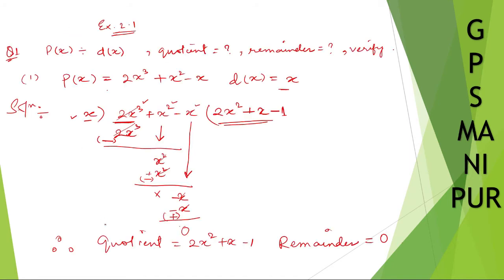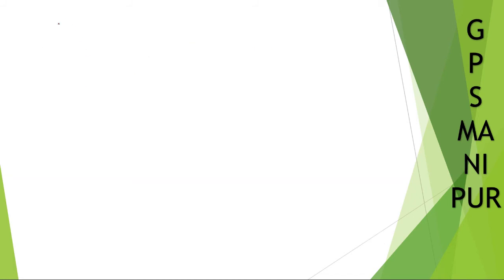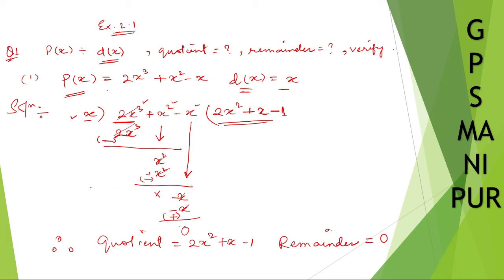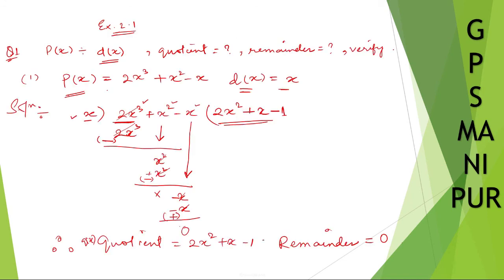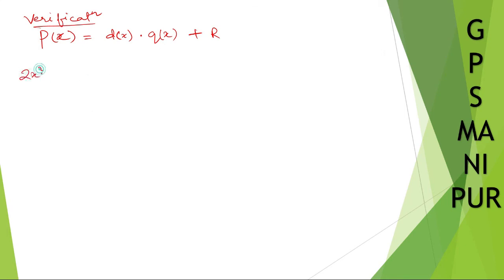Now we need to verify. For verification, we use the division algorithm: p(x) = d(x) · q(x) + r. So p(x) is 2x³ + x² − x, d(x) is x, and q(x) is 2x² + x − 1.